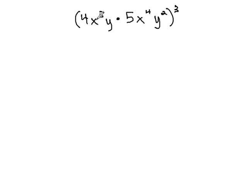So let's simplify inside the parentheses on this problem first. We have 4 and 5 as our numbers. 4 and 5 are bases, and they multiply like always. 4 times 5 is 20.